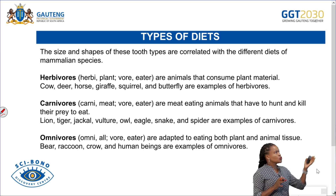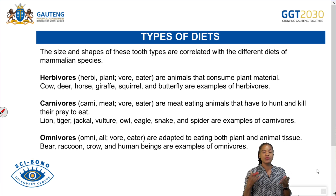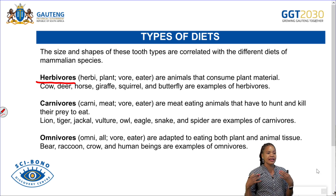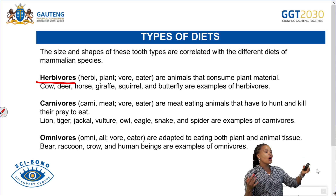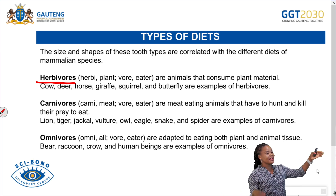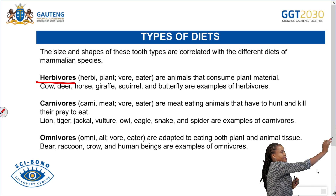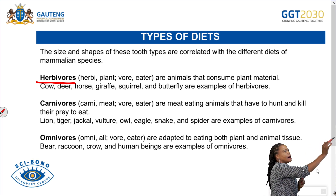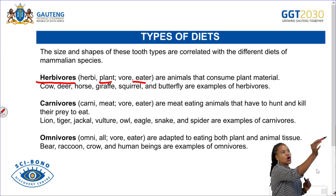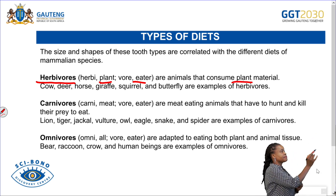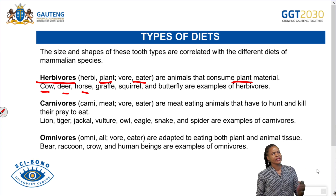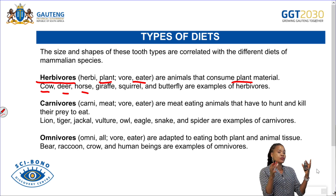Let us look at different organisms and the types of food they feed on. Herbivores are plant eaters — animals that feed on plant materials. Examples include the cow, deer, horse, giraffe, squirrel, and butterflies.